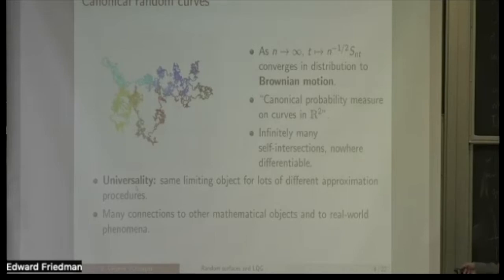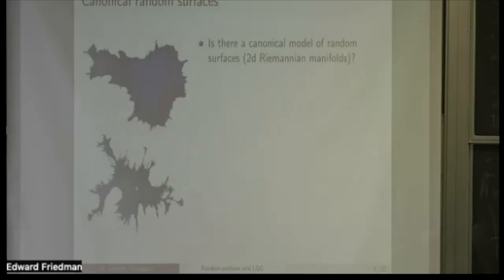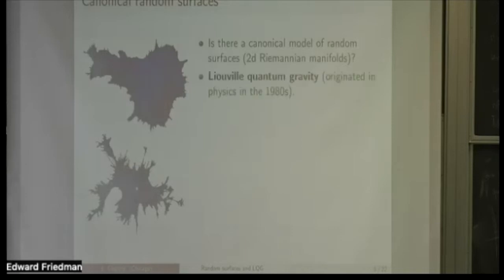In this talk, I want to discuss the analog of this question one dimension higher. Instead of looking at random paths, we want to look at random surfaces, asking whether there's some canonical model of random two-dimensional objects. We want it to be canonical in the same sense that Brownian motion is canonical — describing the large-scale behavior of various types of random surfaces. It turns out that the answer is provided by the theory of Liouville quantum gravity, which will be the topic of today. This theory originated in the physics literature in the 1980s and has been a very active topic of research in mathematics in the last 15 years or so.